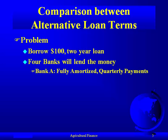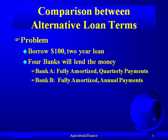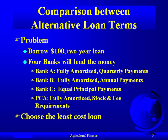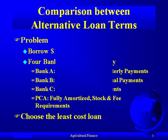The first, Bank A, is fully amortized with quarterly payments. The second is the same but with annual payments. The third bank requires equal principal payments. The fourth bank is actually a production credit association, which does fully amortized loans, requires a stock purchase, and they require a fee. What we're going to do is choose the least cost loan and then talk about the liquidity aspects.